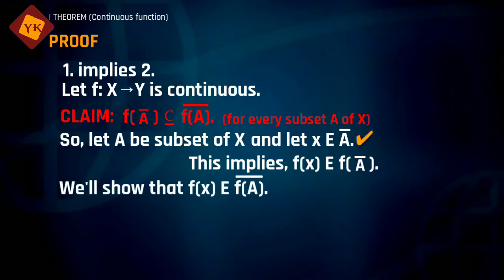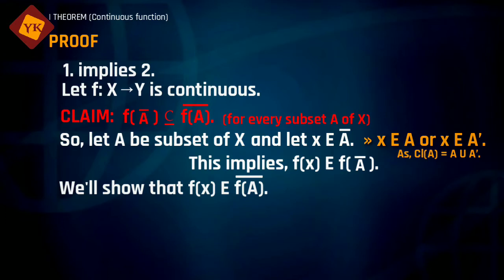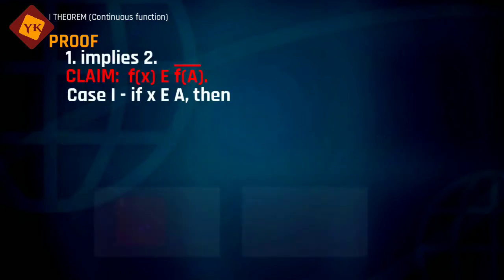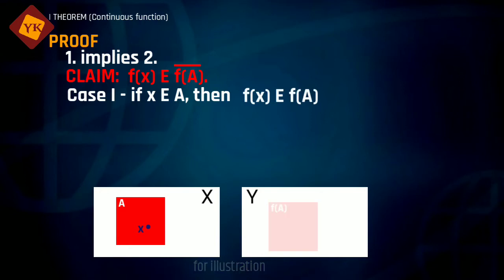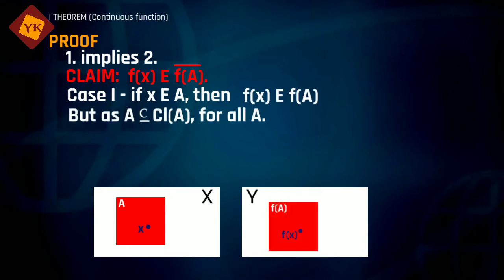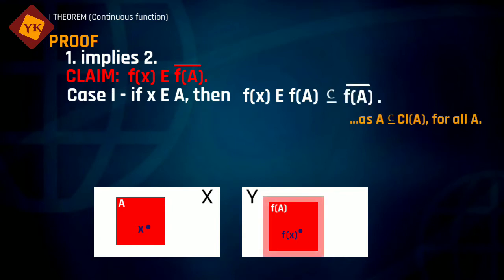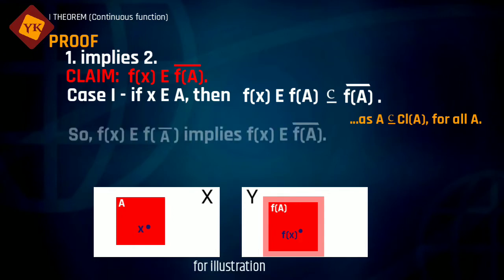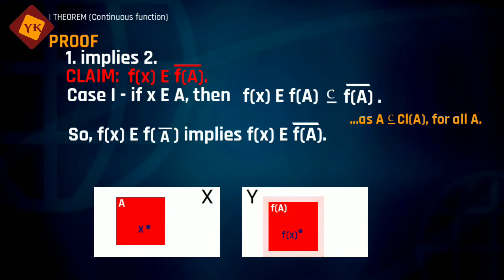Since x belongs to A-closure, either x belongs to A or x belongs to A′ (the set of limit points). Case 1: if x belongs to set A, then f(x) belongs to f(A). Since a set is always contained inside its own closure, f(A) is contained inside the closure of f(A). Therefore f(x) belongs to f(A) implies f(x) belongs to the closure of f(A). So in this case the proof is done.